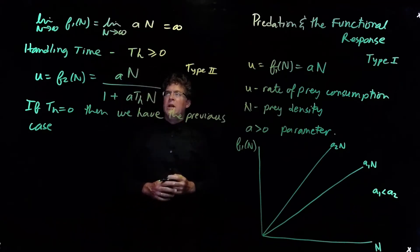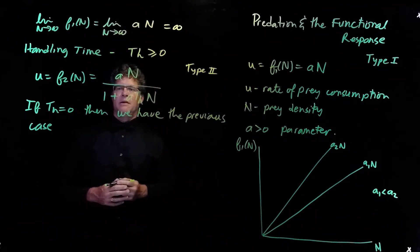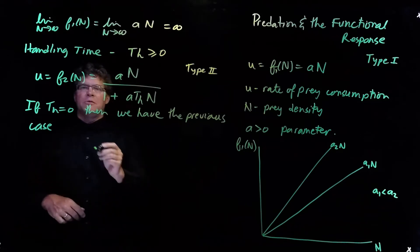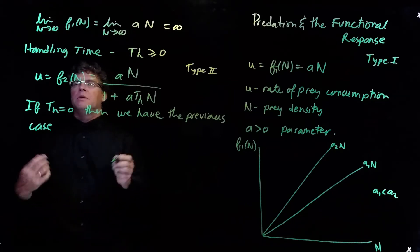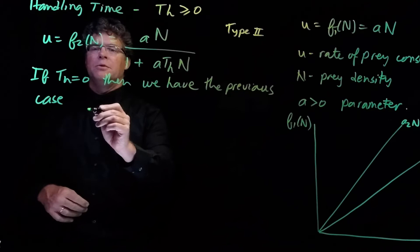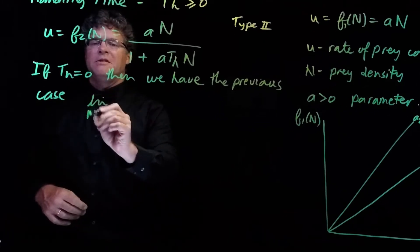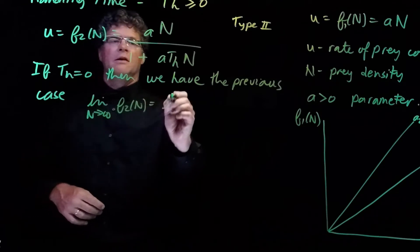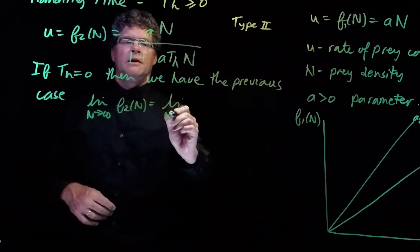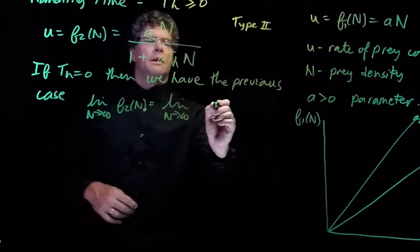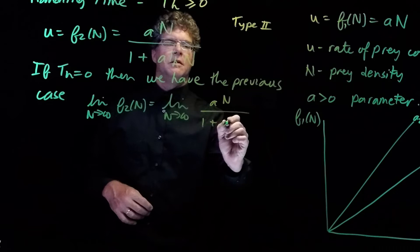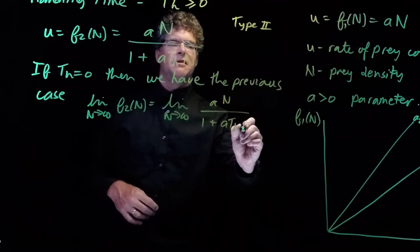Okay, so we'd like to get a sense of what the type 2 functional response looks like. And the first thing we can do is take the limit as n goes to infinity of this f2. So, the limit as n goes to infinity, f2 of n is equal to limit as n goes to infinity,